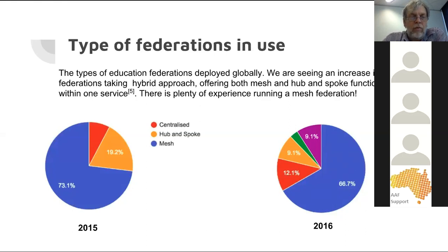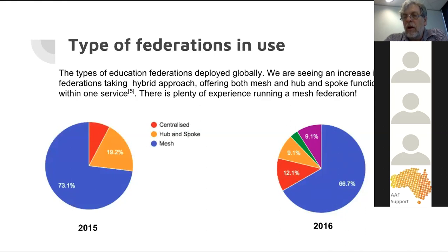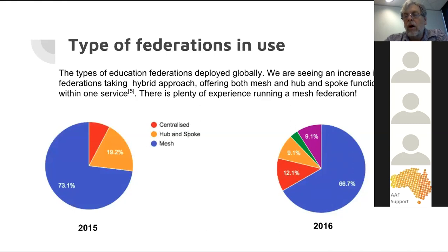Back in 2015, 73% of federations were using a standard mesh federation. In 2016, that number decreased and there's been a move towards the hybrid approach, where part of the federation is hub-and-spoke and the rest is still the traditional mesh style. We haven't seen the 2017 figures from REFEDS yet, but I expect even more hybrid federations will have appeared over time.